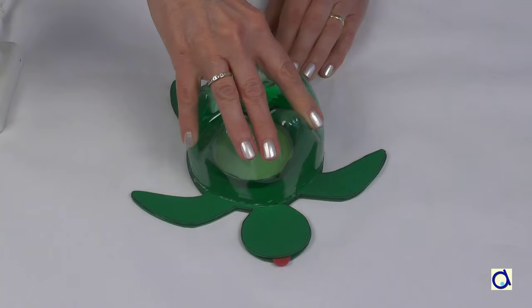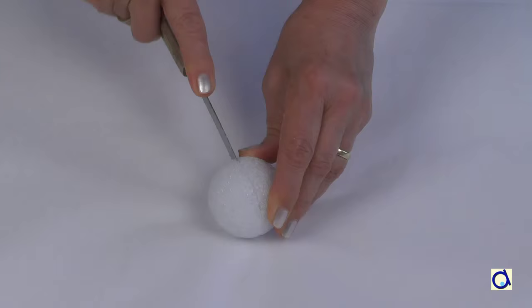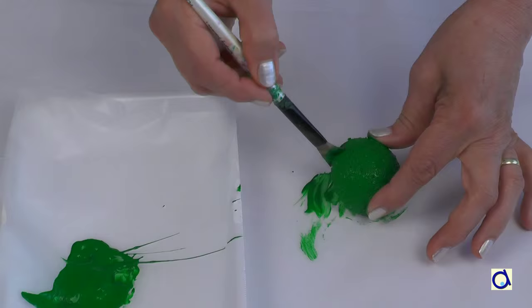Take a styrofoam ball of about 5 cm or 2 inches in diameter and cut it in half. The half styrofoam ball will form the head of the turtle. Paint the head in the color of your choice and let dry. I decided to paint the head green. When the head is dry, glue it in place on the foam circle at the front of the turtle.